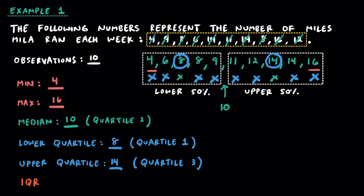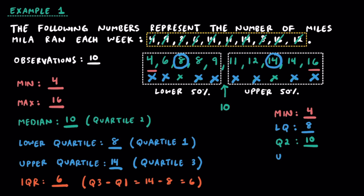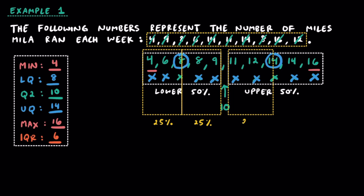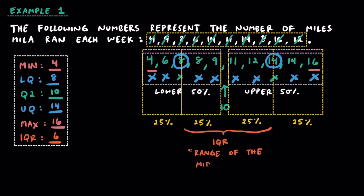While these are our five essential points, let's now calculate the IQR, or the interquartile range. To find the IQR, we just have to subtract the lower quartile from the upper quartile — in this case that's 14 minus 8, which equals 6. The IQR here is going to be 6. Our five essential points separate the data into the lowest 25%, the lower middle 25%, the upper middle 25%, and the top 25%. The IQR of 6 represents the range of the middle 50% of the data.